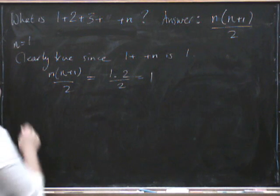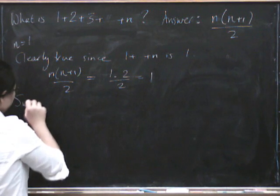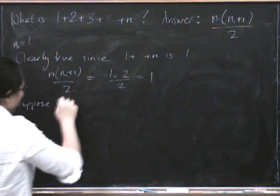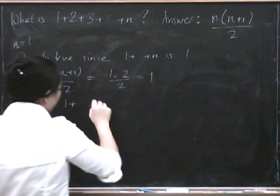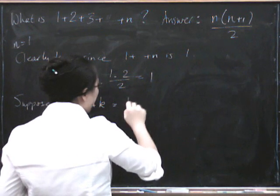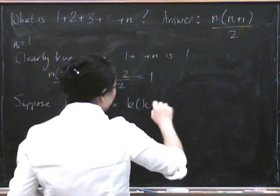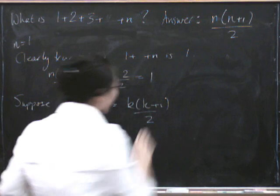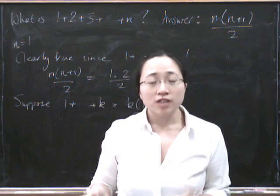So now we have to suppose it's true for n equals k. Suppose that 1 plus 2 plus up to k equals k times k plus 1 over 2. So that's an assumption—we don't try and prove it directly.